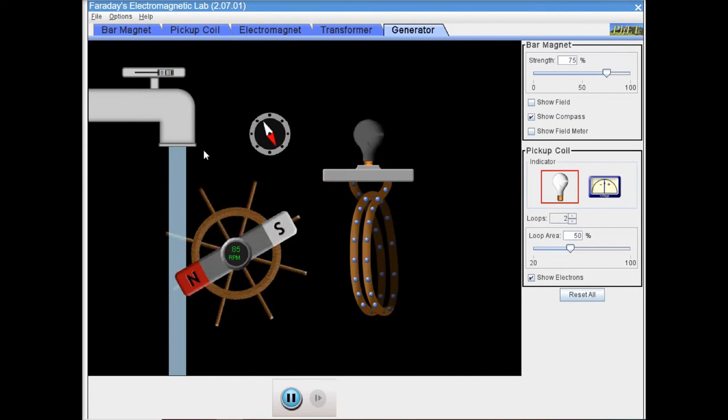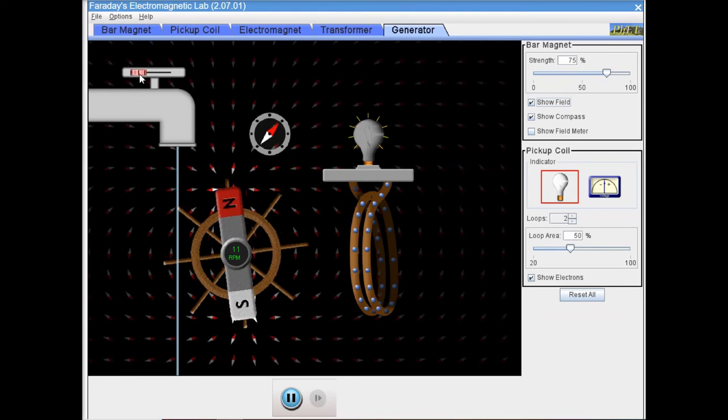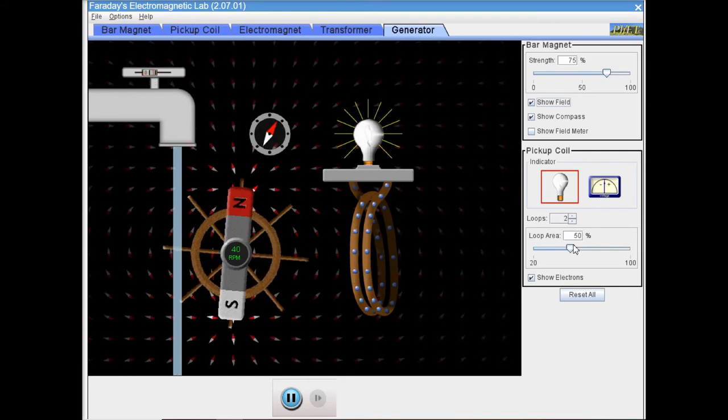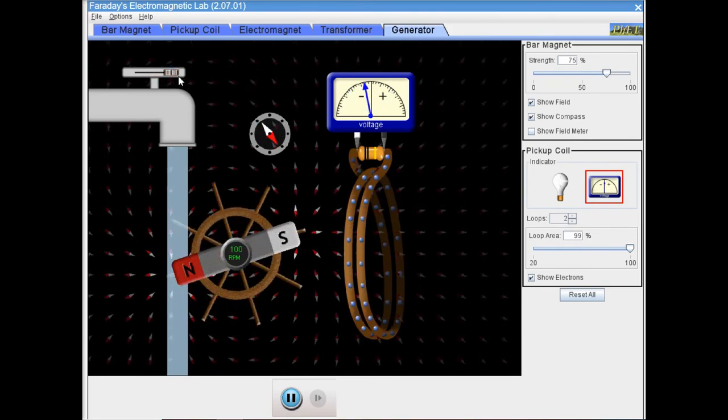Conversion of mechanical to electrical power happens through generator. It can be tried out here by changing the number of loops, area of the loop, and the speed at which magnet rotates.